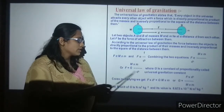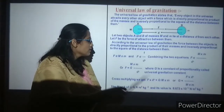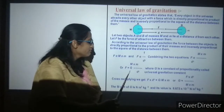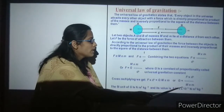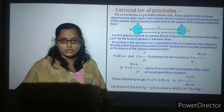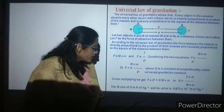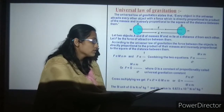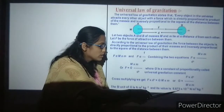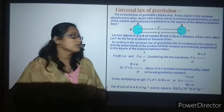Cross multiplying, we get F into D squared is equal to G·M·m. So G is equal to F times D squared divided by M·m. The SI unit of G, the gravitational constant, is N·m² per kg². Its value is 6.67 × 10⁻¹¹ N·m² per kg².